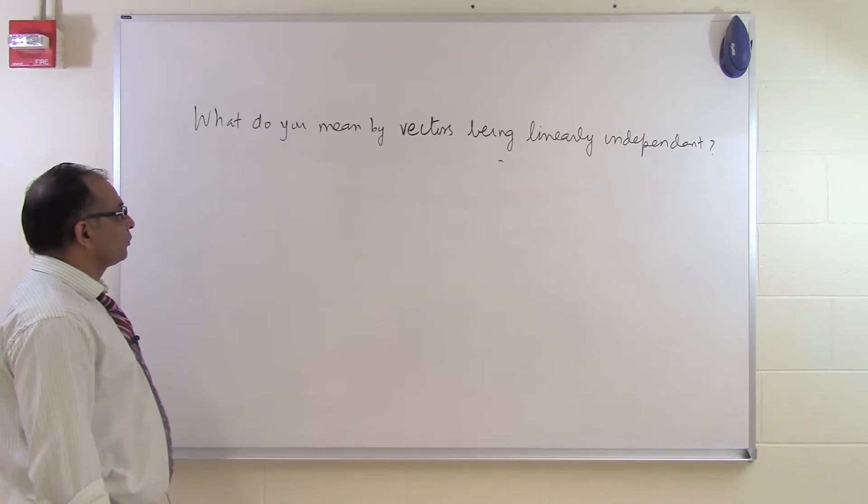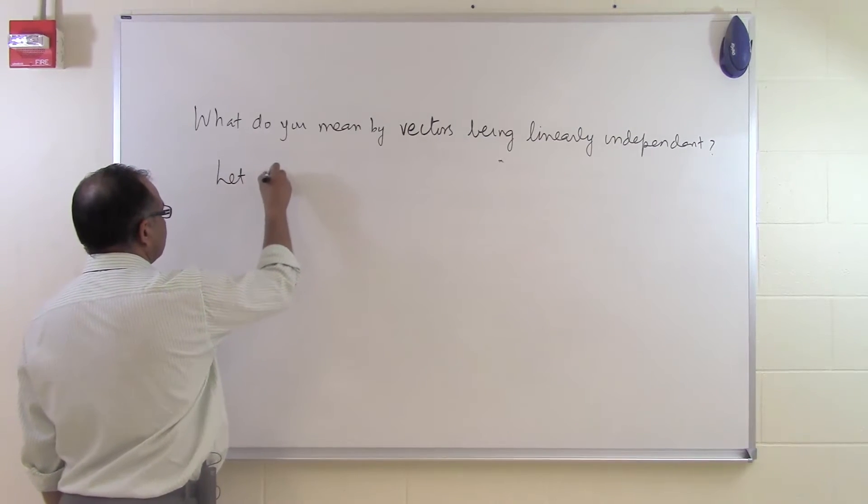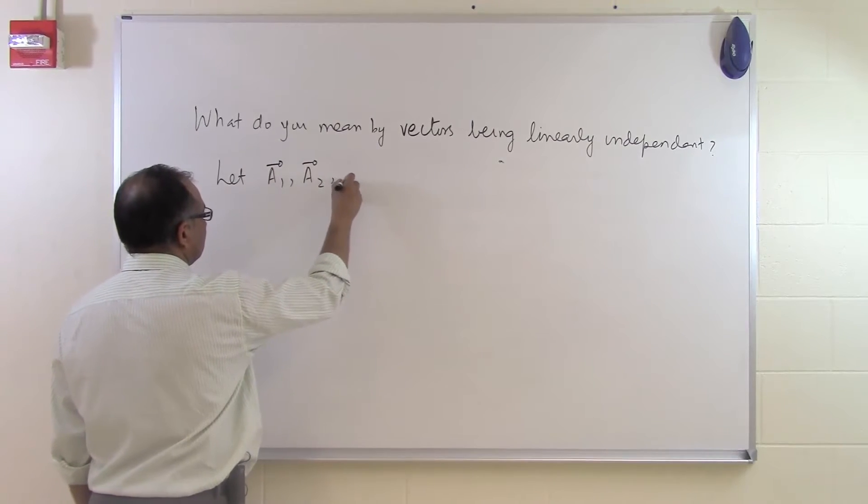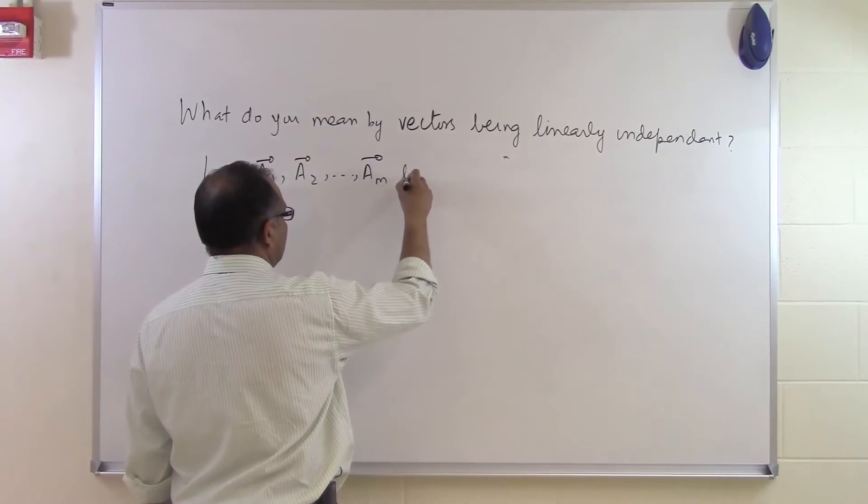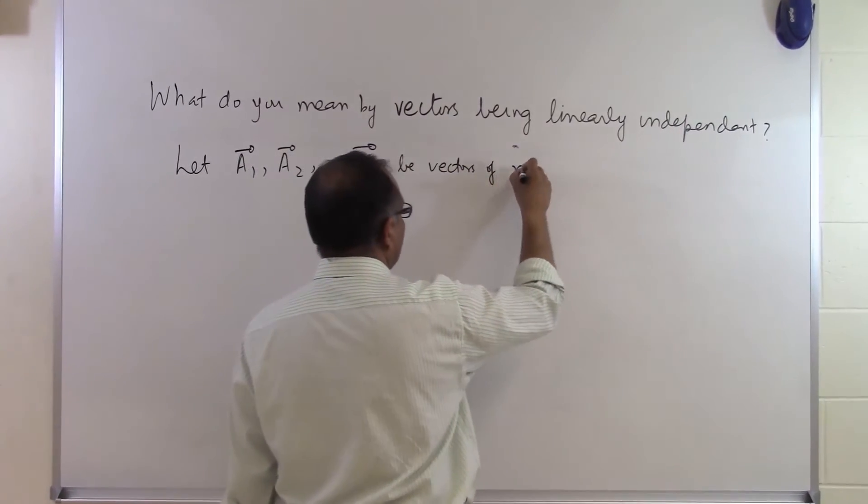In this segment we will talk about what does it mean by vectors being linearly independent. So let a1, a2, all the way up to am be vectors of n dimension.